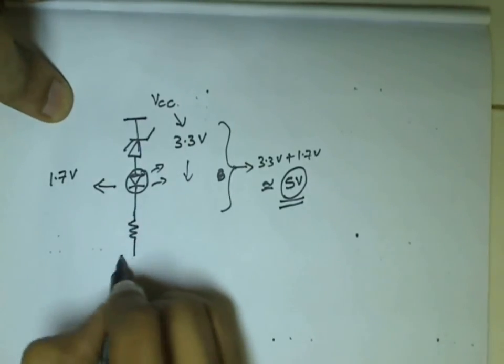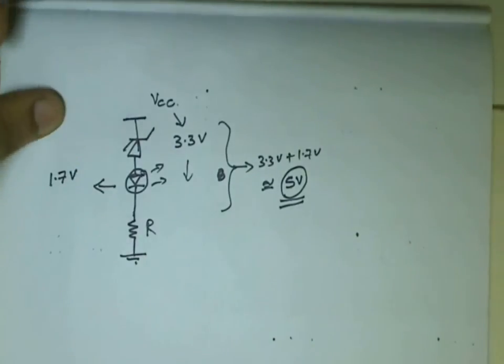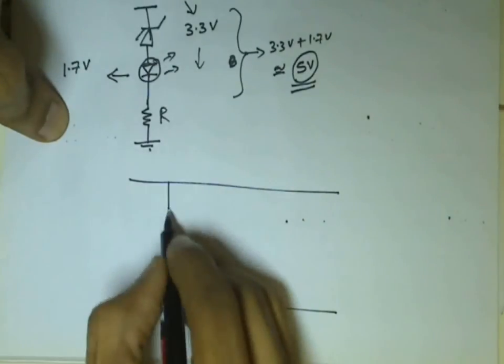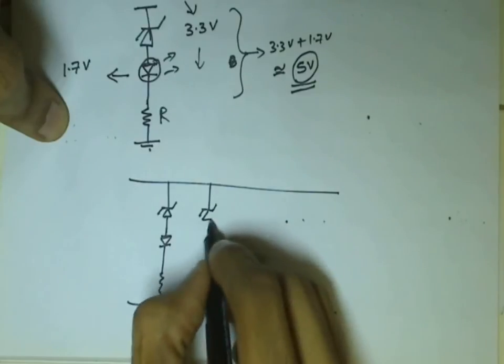We can connect a resistor in series with the LED to limit the current going to the LED and protect it from burning out. This LED lights up when the voltage across the module crosses 5 volts. We can make several such modules to indicate different voltage ratings using different Zener ratings.